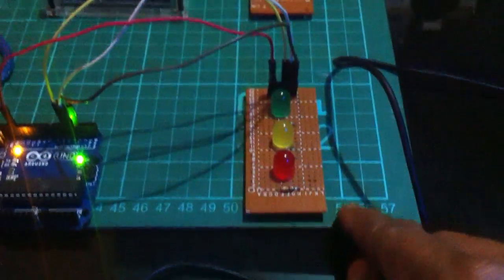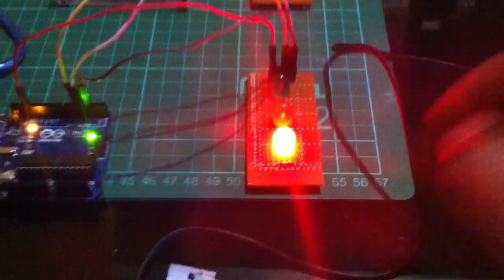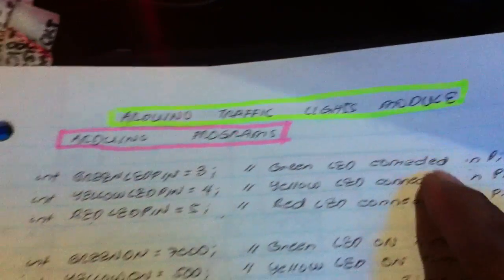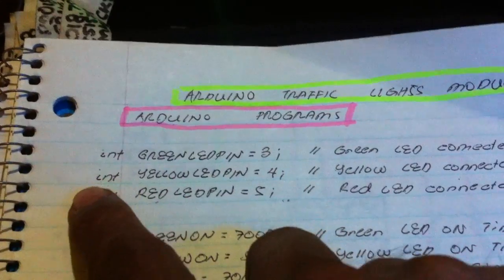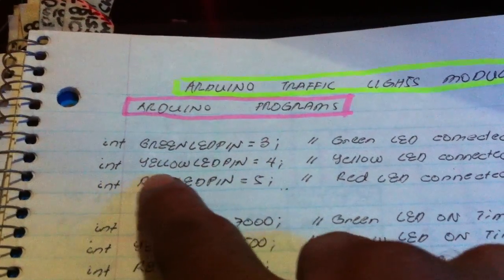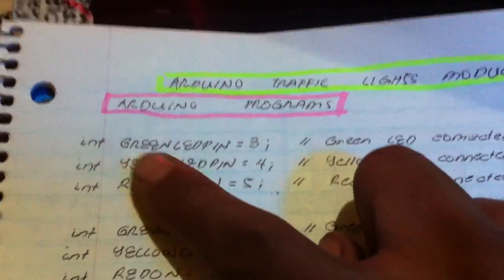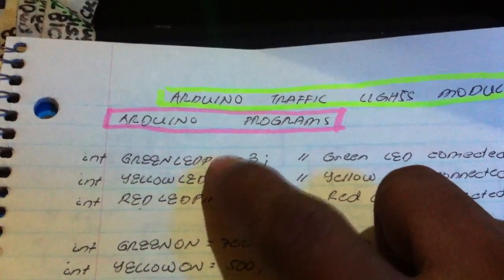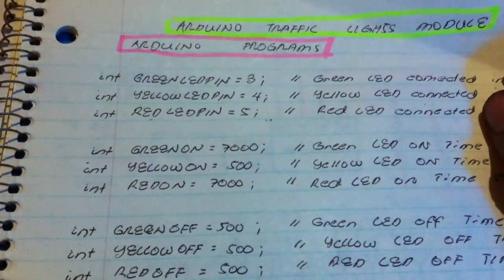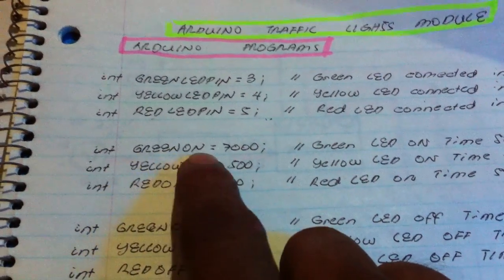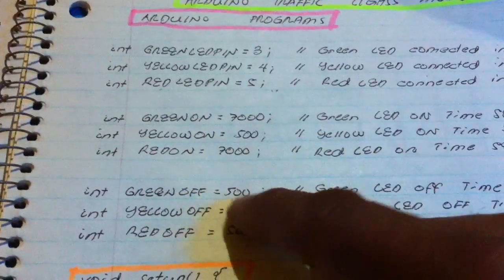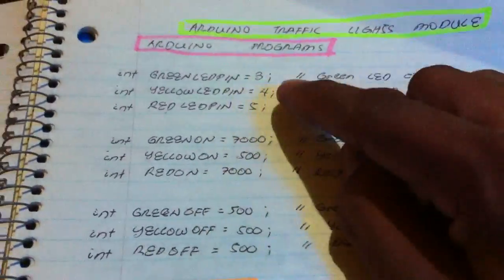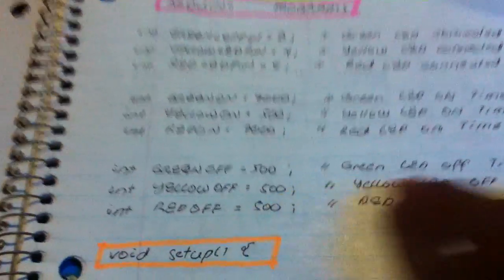To control the timing of the traffic lights, we use an Arduino program. This is the declaration of the variables: instead of pin 3 we use the name 'greenLEDpin' — we declare this as an integer. The on-time for green is set to 7000 milliseconds; this is for the off-time, making the LED turn off; this one is to turn on. So we declare the pin, the on-time, and the off-time.